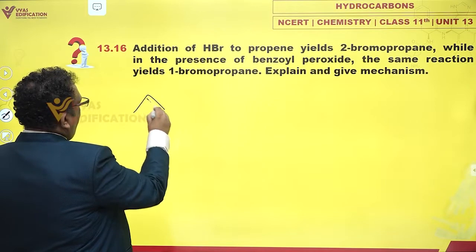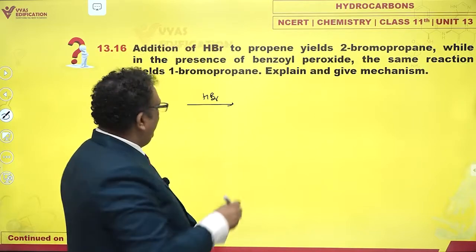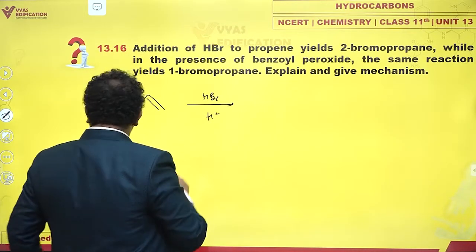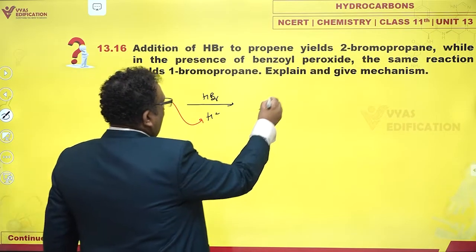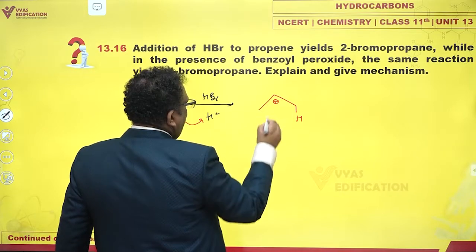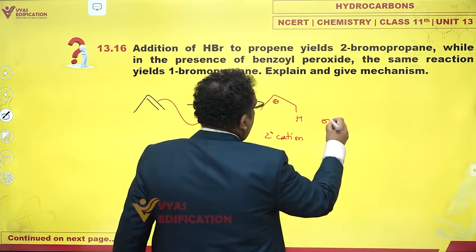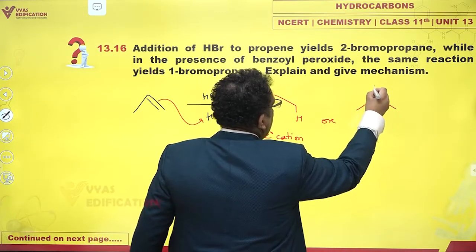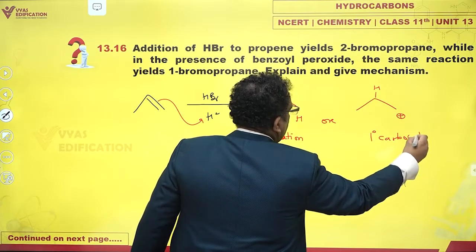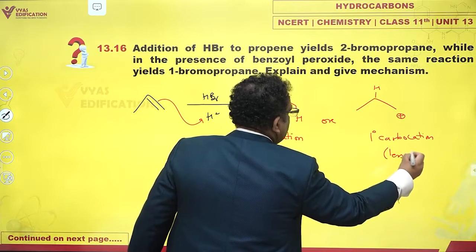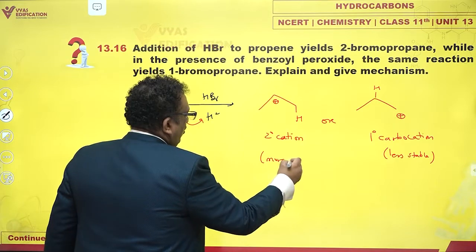This is propene — you add HBR. Mechanistically, what happens? First of all, H+ gets added. And as H+ gets added, if H adds on carbon 1, you get a secondary carbocation. Or there is another possibility: H adds on carbon 2, so you have a primary carbocation. The primary carbocation is less stable, and the secondary carbocation is more stable.